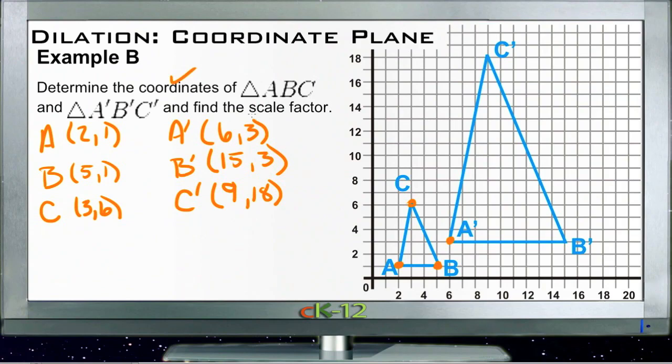And then it says to find the scale factor, so what we need to do is figure out what it takes to convert one of the original points, say C here, to C prime. What do we have to multiply each of C's coordinates by to make them equal to C prime coordinates? Well, our first coordinate was a 3, and to get a 9 from a 3 we got to multiply by 3—3 times 3 is 9, of course, so that scale factor is a 3.